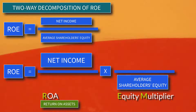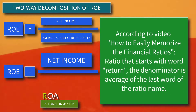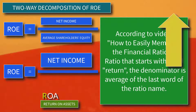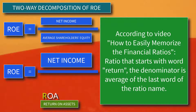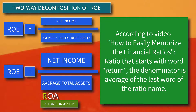If you remember the video 'How to Easily Memorize the Financial Ratios,' it says that for a ratio starting with the word 'return,' the denominator is the average of the last word of the ratio name. The link to that video is in the description below or click the card above. Since we are talking about Return on Assets, the denominator is Average Total Assets.